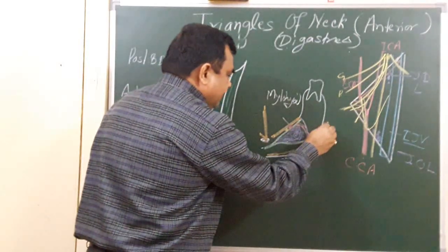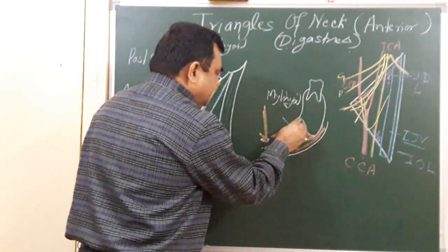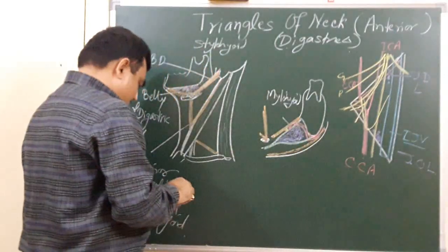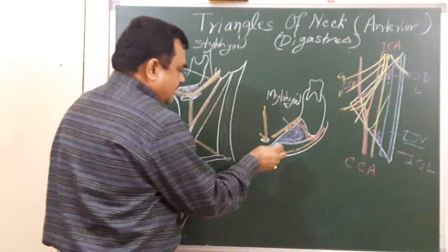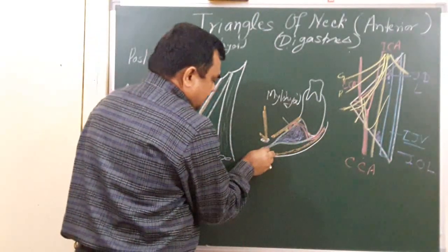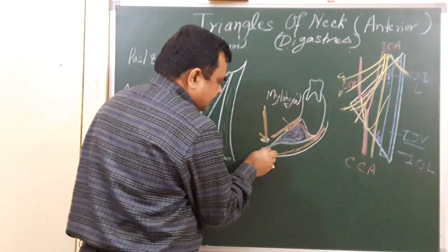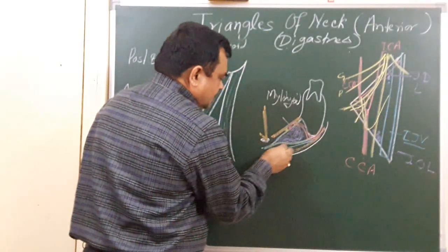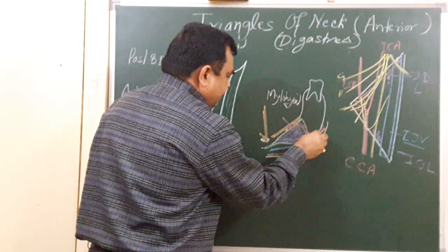Here is the position of the facial artery, which lies here like this. This is the facial artery. And another structure — this is the facial vein. Here lies the facial vein.